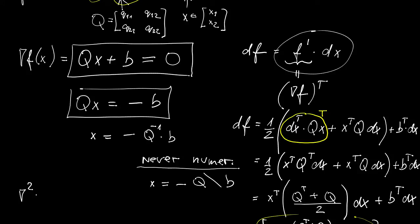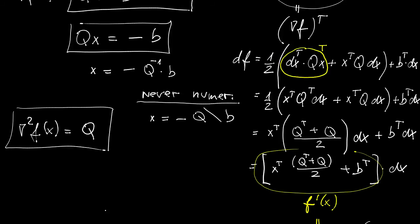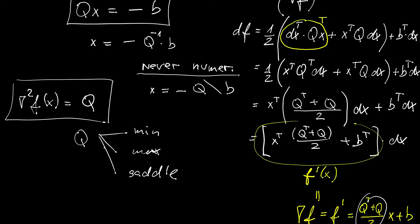For second-order conditions we need the Hessian of f, which is obtained by differentiating the gradient following the same procedure — the answer is simply Q. Based on Q we can classify the critical point into several scenarios: minimum, maximum, saddle point, or a singular case where the second derivative test is inconclusive.